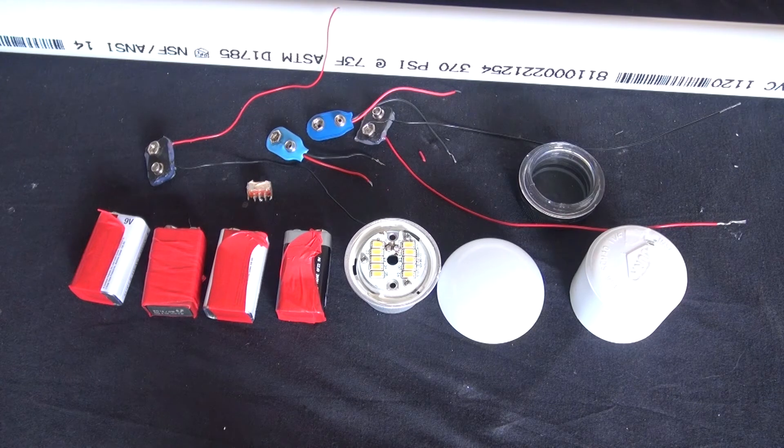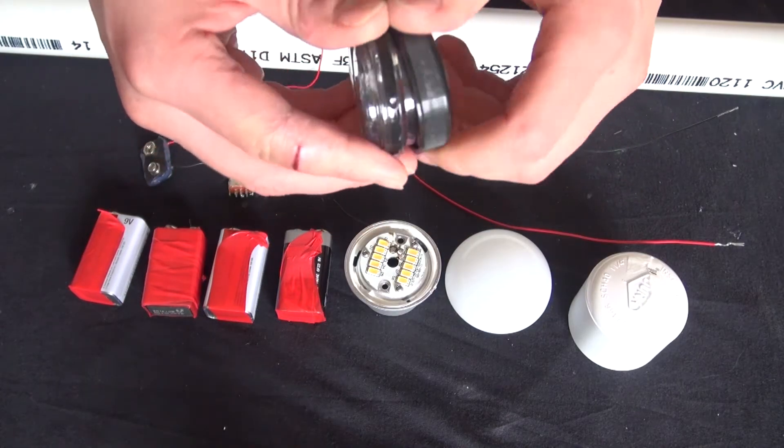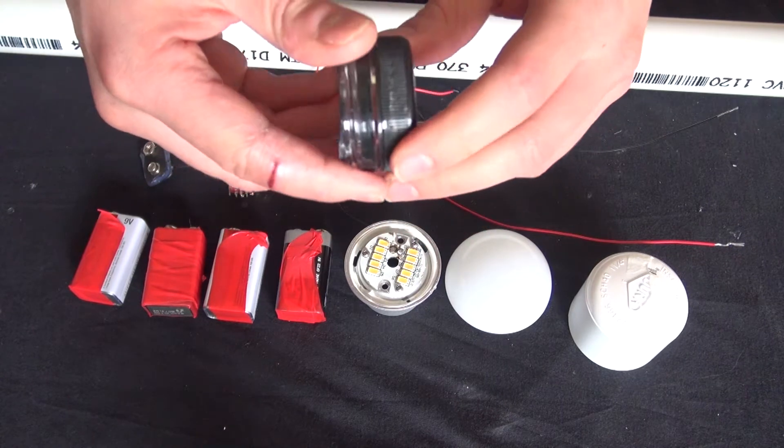also the cap, PVC pipe, PVC cap, and this here is the bottle cap that you can use to attach the LED lightbulb to.